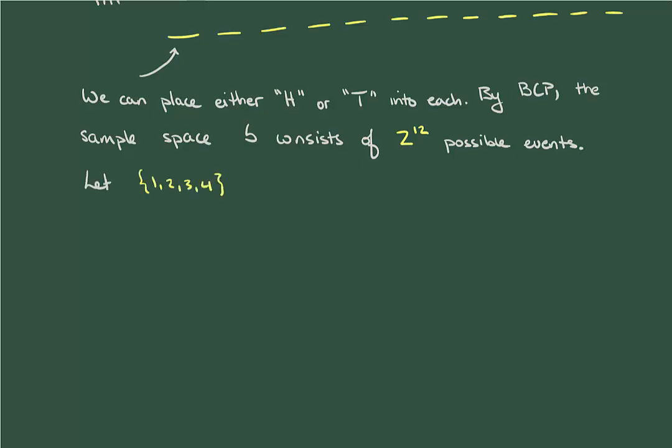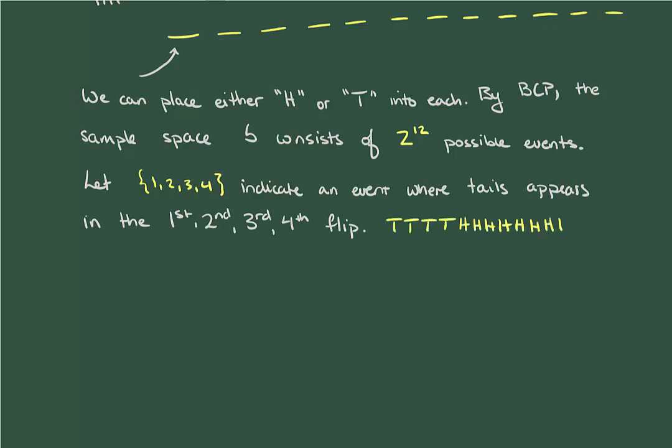To do this, let's keep track of the tails by writing them like 1, 2, 3, 4, which tells us that the tails occur on flips 1, 2, 3, and 4. This is represented by the following sequence of 12 coin flips.